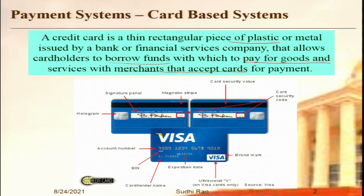This is a typical example of a card — a Visa card. Other popular cards are JCB (the Japanese Credit Bureau), Mastercard, American Express, and Diners Club — all have their versions of credit and debit cards.